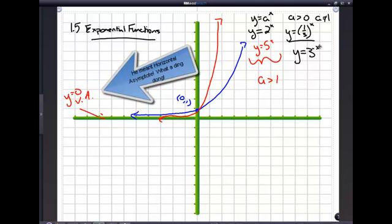Because b to the negative n is equal to 1 over b to the n, right? So, what do you remember? What happens if I take a function, any function f of x? What happens to its graph if I go f of negative x?